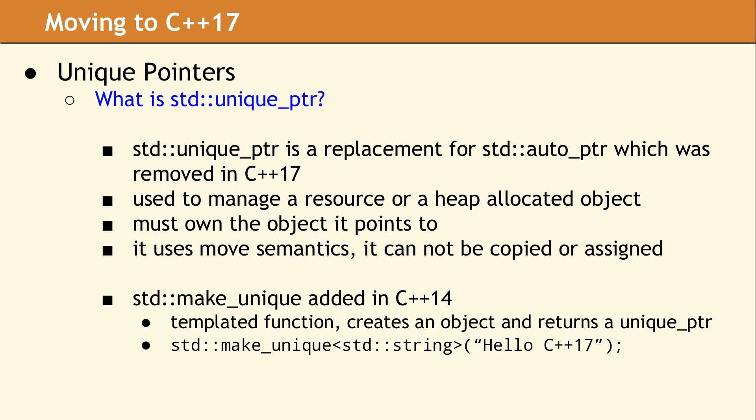The purpose of std::unique_ptr is to manage a resource, typically a heap-allocated object. By design, unique_ptr will clean up the resource or deallocate the object it was managing when the lifetime of the pointer ends. It is important that no other code clean up the resource, since the unique_ptr owns the object it points to.